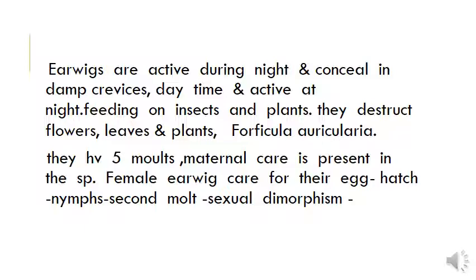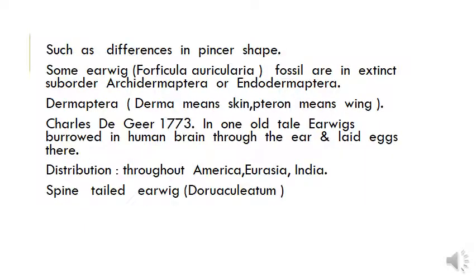Sexual dimorphism is present — differences are seen in pincer shape. Some earwigs, like Forficula auricularia, are found in fossil or extinct form. Sub-orders Archidermaptera and Endodermaptera are referenced here.